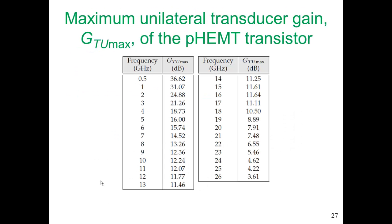Looking at the PM transistor introduced at the beginning of this case study, here are its maximum unilateral transducer gains at a number of frequencies. At 8 GHz — the target design frequency — the maximum unilateral transducer gain is 13.26 dB. This tells us it will be very difficult to design an amplifier at 8 GHz with a gain of 14, 15, or 16 dB. But if the target gain is close to 10 dB, the design process works fairly smoothly, and we can come fairly close to 13 dB without exotic design.